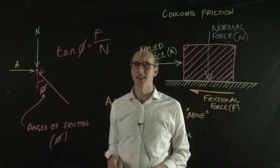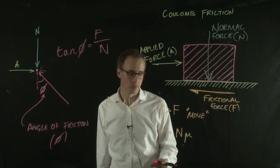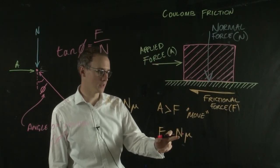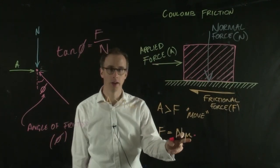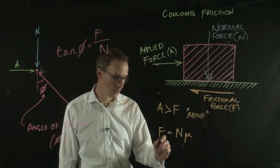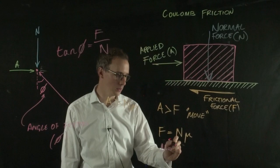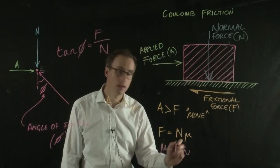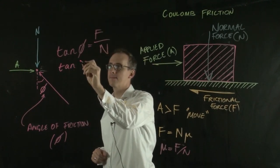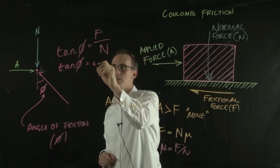This angle of friction has a relationship with the coefficient of friction where F equals N times μ. If we write it just in terms of μ, we have μ equals F over N. So we can see that tan φ equals μ.